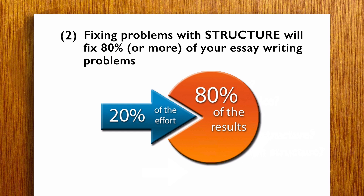Fixing problems with overall essay structure will fix 80% or more of the problems with your essay. In an 80-20 analysis, this would be the input that makes the greatest contribution to the overall success of the essay. Don't take the exact percentages seriously — they're just to illustrate a point, which is that structural issues have a disproportionate impact on the success of an essay.